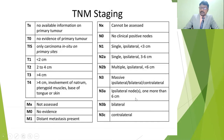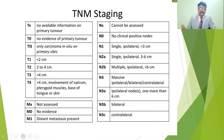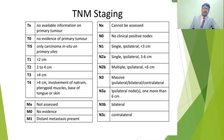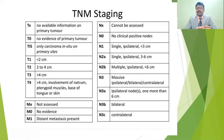For M (metastasis): MX means metastasis cannot be assessed; M0 means no evidence of distant spread from one place to another; M1 means distant metastasis is present — the cancer is extending from one place to another. Using the TNM staging system — tumor size, node involvement, and metastasis — we can determine the severity of tumors, predict complications, and estimate survival rates.